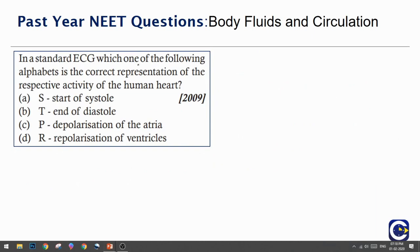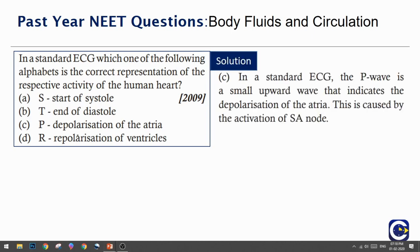In a standard ECG, which alphabet correctly represents the respective activity of the human heart? S — start of systole; T — end of diastole; P — depolarization of atria; R — depolarization of ventricle. From the previously discussed questions, the solution is option C: P represents depolarization of atria. The small upward positive wave indicates depolarization of the atria, caused by activation of the sinoatrial node.